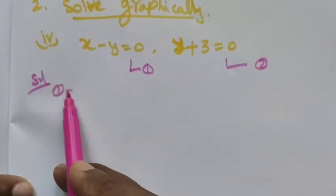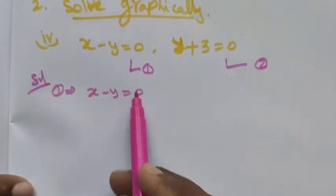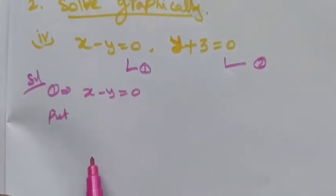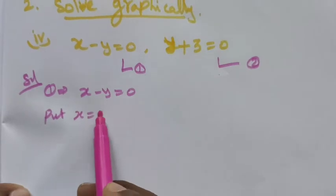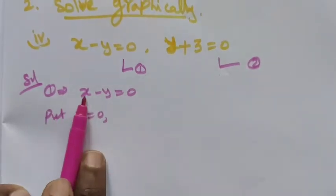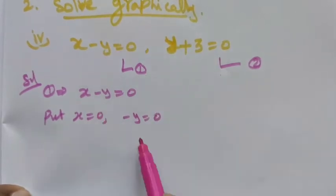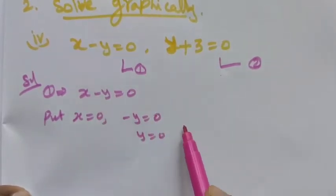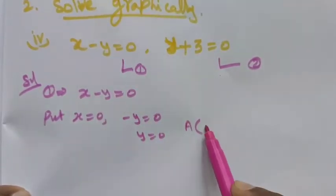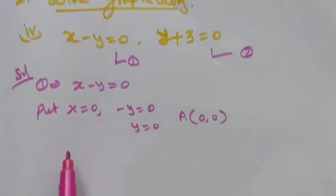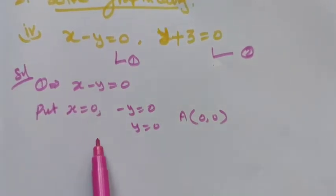Taking the first equation, x minus y equal to 0, we want to find the ordered pairs. Put x equal to 0: we get minus y equal to 0, so y equal to 0. That gives us point A as (0, 0). Next, put y equal to 0: here also we get the same point (0, 0).